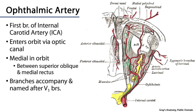The ophthalmic artery has branches that accompany and whose names mirror branches of the ophthalmic nerve. For instance, there is the frontal artery, also known as the supratrochlear artery at its terminus, which has ethmoidal branches. There's also a supraorbital branch, a lacrimal branch, and many other branches.